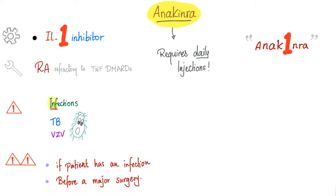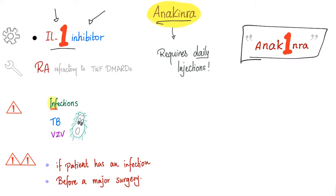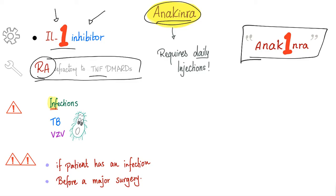Anakinra is an interleukin-1 inhibitor. Medical students love this one because it's easy to remember, but in real life doctors don't love it as much — they believe other DMARDs are more effective. Clinical use is the same: rheumatoid refractory to TNF-DMARDs. Anakinra requires daily injection, which is another reason doctors don't prefer it. Side effects include infections, and contraindications are the same.